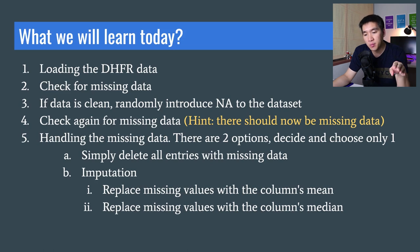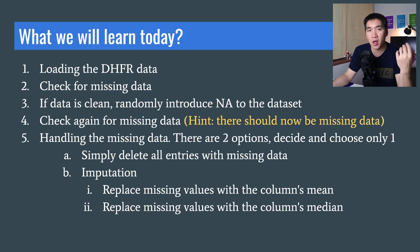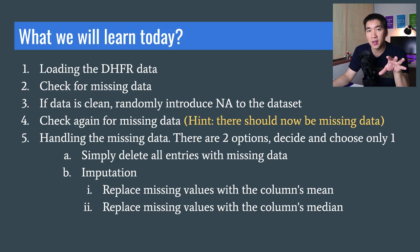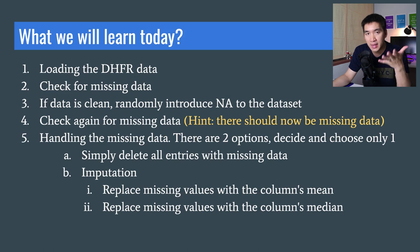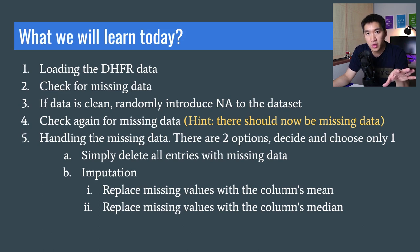The second approach is to perform imputation — the process by which you replace the missing value with another value, for example the column's mean or the column's median. We'll show you how to do that in R. The code will be available on the Data Professor GitHub, with links in the description below.